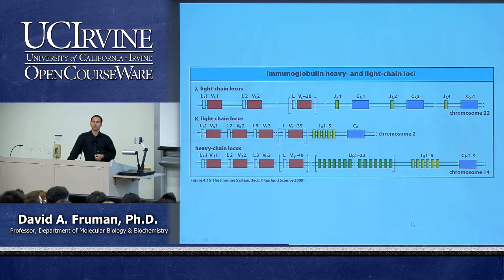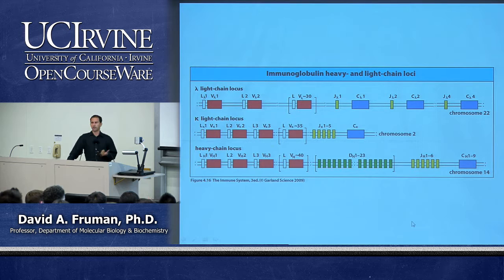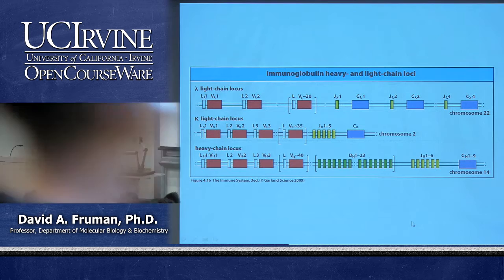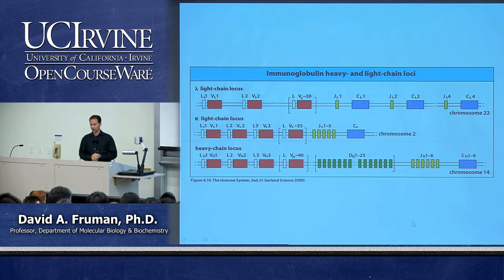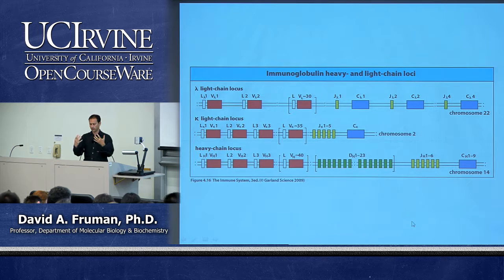Before getting into the figures, let's establish some definitions because these terms can be confusing. A protein is a functional unit that does something in a cell, but it can consist of more than one polypeptide — for example, an antibody has two heavy chains and two light chains. A chain is one polypeptide within a protein, such as a heavy chain. A domain is a part of a polypeptide chain that folds into a structural unit, like an Ig domain.